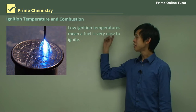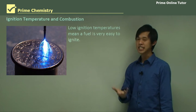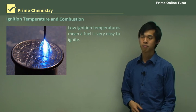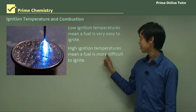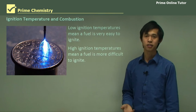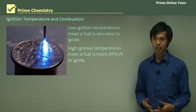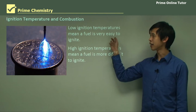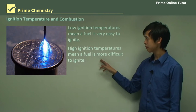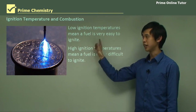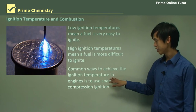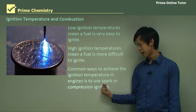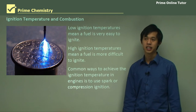A low ignition temperature means a fuel is very easy to ignite — it will be able to ignite at low temperatures, so it's very flammable. High ignition temperatures mean a fuel is more difficult to ignite at low temperatures. Gasoline or petrol is a high ignition temperature fuel, and diesel is a much lower ignition temperature fuel. Common ways to achieve ignition temperature in an engine are spark ignition, used in petrol cars, or compression ignition, used in diesel cars.